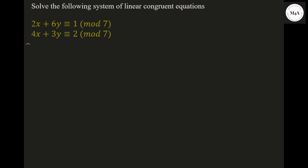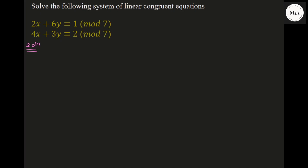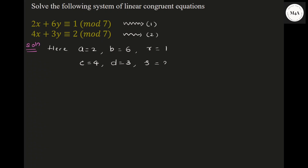As I said in the previous class, compare this with the general form, then write down A, B, C, D. In the solution, call them equation 1 and equation 2. Here, A is 2, B is 6, R is 1, and C is 4, D is 3, and S is 2. N is 7.